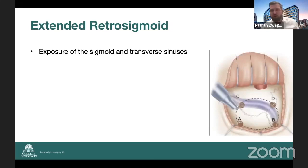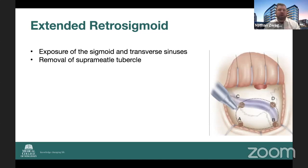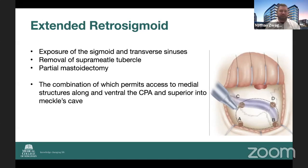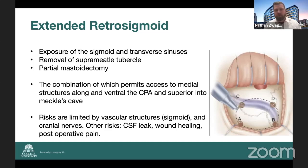The extended retrosigmoid approach is a workhorse for neurosurgery, where we accomplish a wider opening exposure of the transverse and sigmoid sinuses. This allows us to get more of an angle to accomplish our goals. A lot of times we remove the suprameatal tubercle, which allows us to get higher by cranial nerve three into Meckel's cave. We often do a partial mastoidectomy anterior to the sigmoid to retract it further out of the way for better visualization of our target. The combination allows access to the medial CPA structures and superior into Meckel's cave. Risks include vascular structures, the sigmoid sinus, cranial nerves in the depths, CSF leak, wound healing, and postoperative pain.